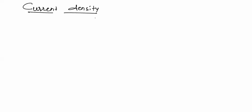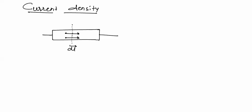Now we will define current density. Suppose this is a material; in this material, if charge carriers move from one side to the other side. For a small time DT, I have observed the charge carriers move from one point to another point, meaning there is a change in charge with respect to change in time. If there is a change in charge with respect to change in time, I can say that this material is conducting — current is flowing through the material. Current is nothing but change in charge with respect to change in time.